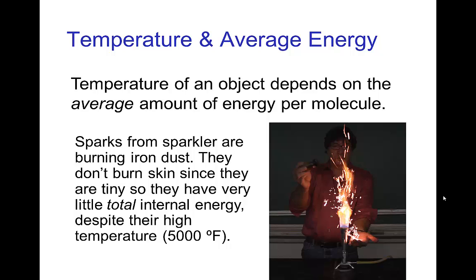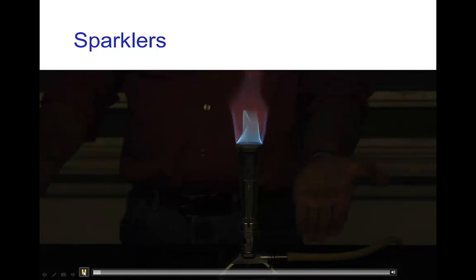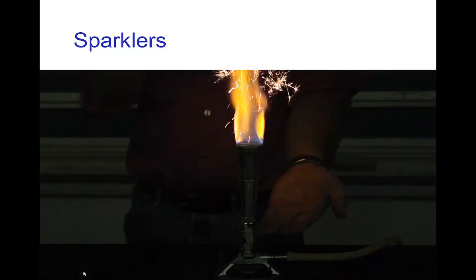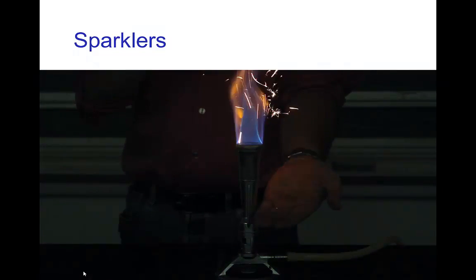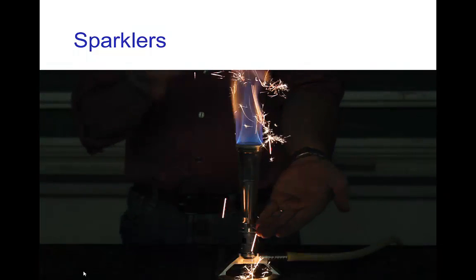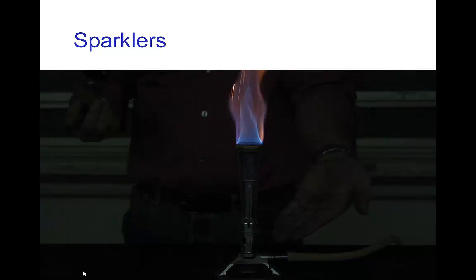To give you an example of this distinction: if I take sparks from a sparkler, those are burning iron dust. That burning iron dust has a very high temperature — several thousand degrees Fahrenheit. But if I sprinkle some of that dust onto my hand, as shown in this video, you can see the dust is being lit by the flame and some of these sparks are landing on my hand. Even though they have a temperature of about five thousand degrees Fahrenheit, they are not burning my hand.